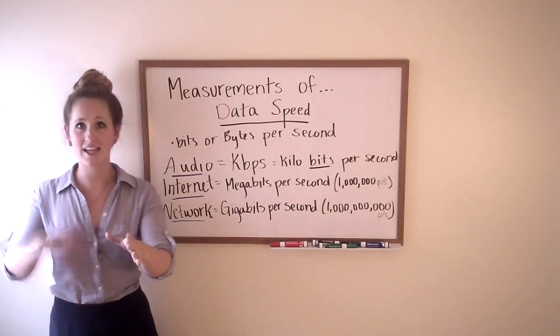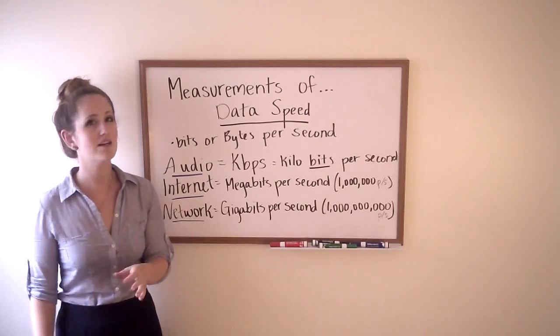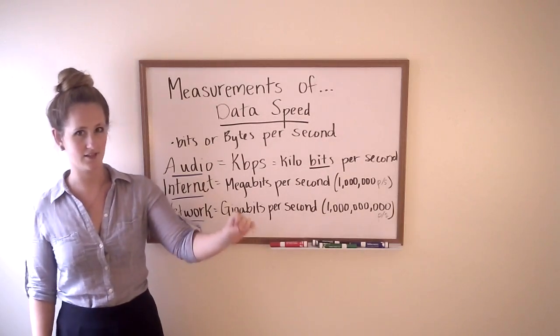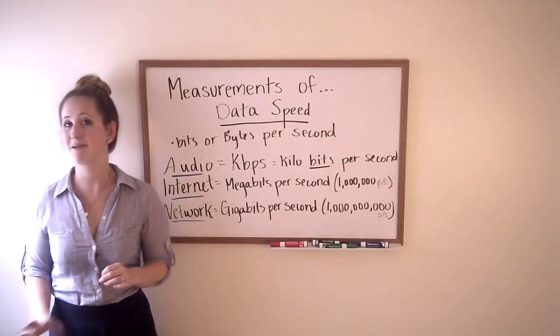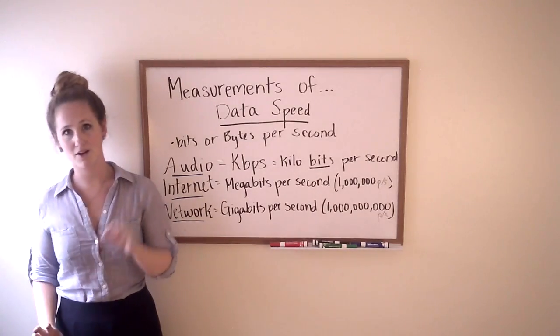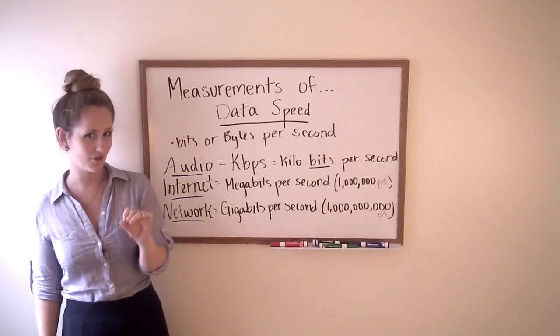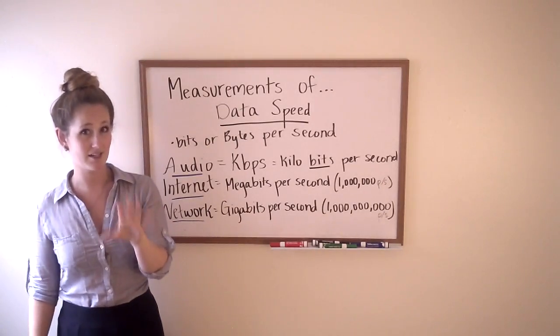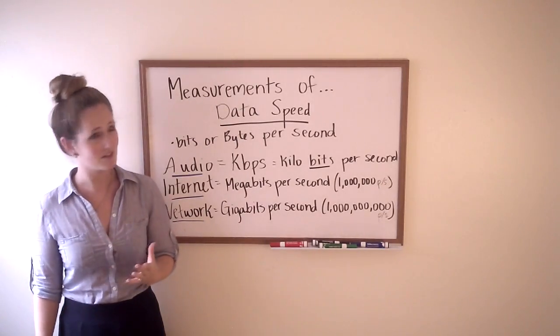Data speed, unlike data size, is usually measured in bits per second, whereas size is measured in bytes. Big difference being bytes is eight times bigger than bits at the very smallest level. Once we start talking exponentially, that makes a really big difference.